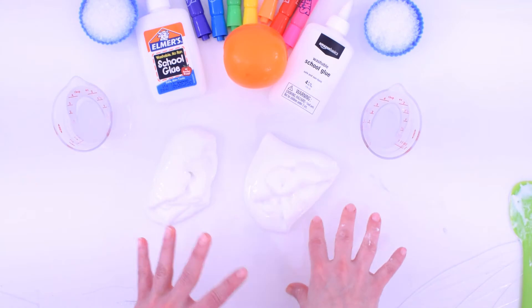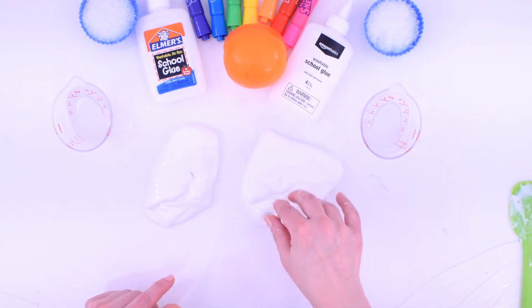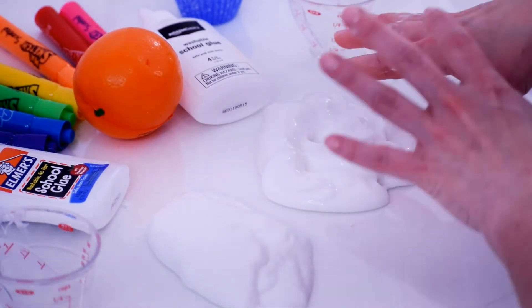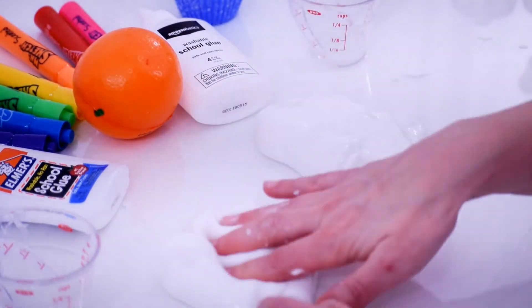And although both little cups or bowls had the same amount of glue in them, because there was more activator placed into Amazon, the slime is slightly bigger in volume than the Elmer's one is.